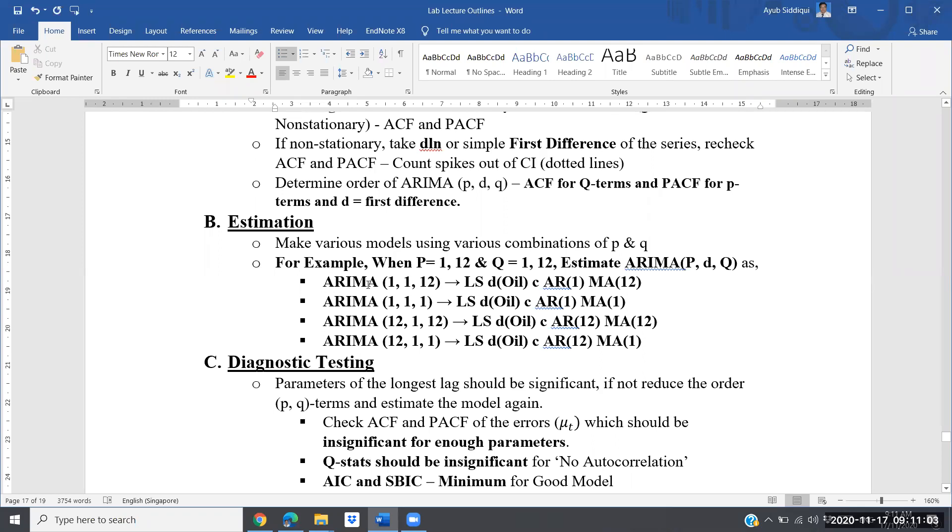Possibly four models will be estimated in this case. First ARIMA 1,1,1,12 means P value 1, taking the first difference of the series and Q value 12. In Eviews, we will follow this step if we are using command window. In the command window, we will write the method and then difference of the series, oil price series. P value is 1, therefore AR1. Q value is 12, therefore we will write MA12.